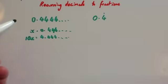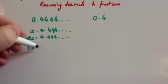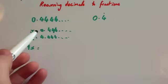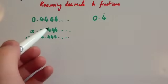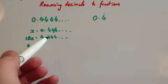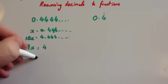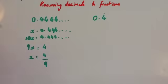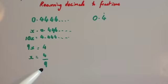Now if I subtract the top equation from the bottom equation — taking x away from 10x gives 9x — and most importantly, taking 0.4 recurring away from 4.4 recurring, the 0.444... part disappears, so you're just left with 4. Then divide by 9, so x = 4/9. So 0.4 recurring equals 4 ninths.